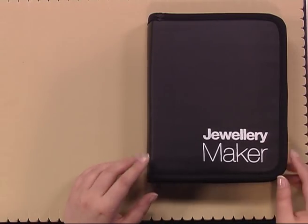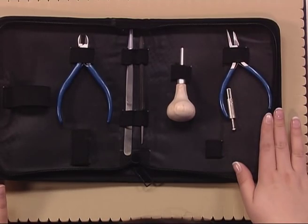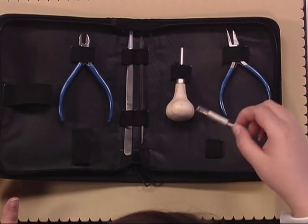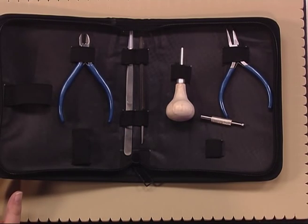So here we have the Jorymaker gem setting toolkit. You'll see within this we have several sets of pliers, a pusher, a stone grabber, tweezers, and also a needle file here as well.